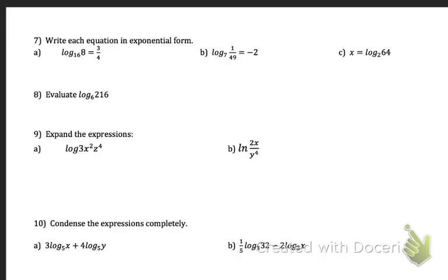For problem 7, we are writing each equation in exponential form. So we're going to do change of base, or I'm sorry, not change of base. We're going to do the log ride where we write 16 to the 3 fourths equals 8. So I'll do this first one for you. 16 to the 3 fourths equals 8. For C, it might be helpful to switch to make it look like that. Problem 8 says evaluate log base 6 of 216. You could either do change of base formula. So put log of 216 divided by log of 6 in your calculator. Or you could change forms and figure out 6 to the what power equals 216. You should get 3 for this answer.